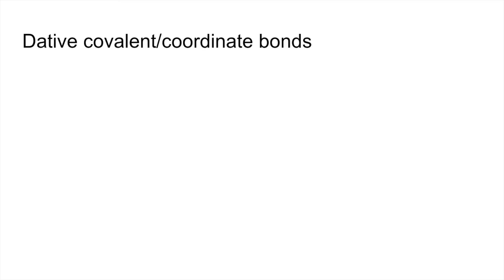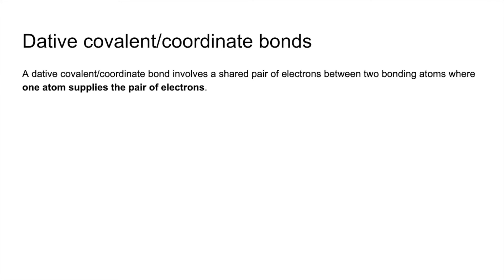So we're finishing with dative covalent or coordinate bonds. Both terms mean the same thing. It's still a shared pair of electrons between the atoms, but one atom is supplying the pair of electrons.